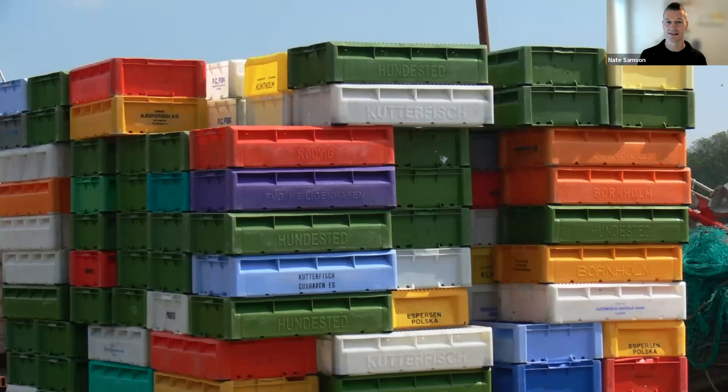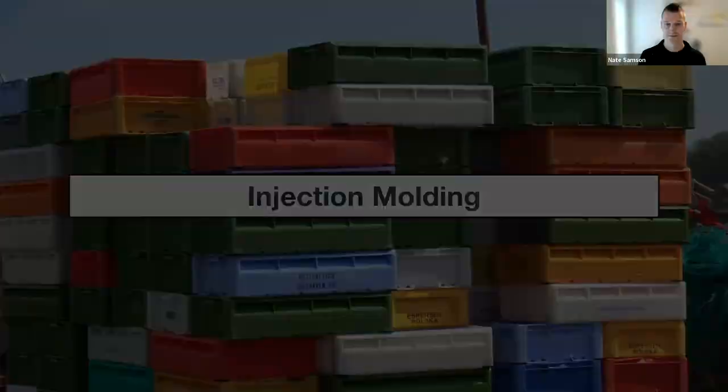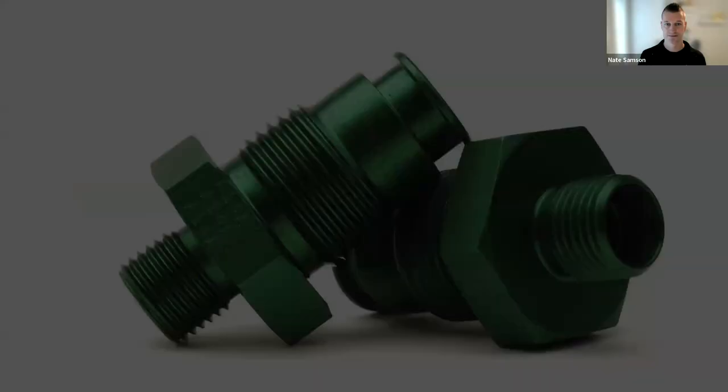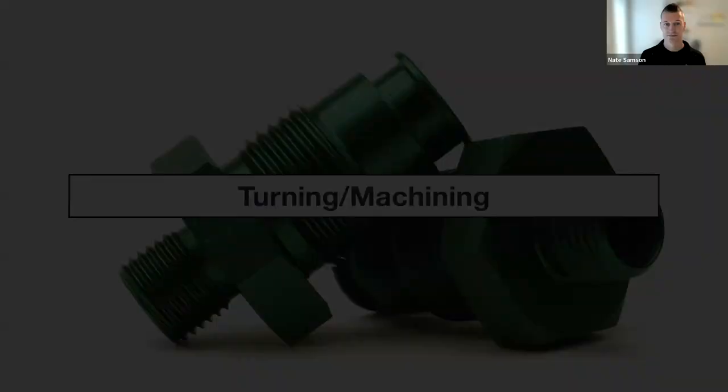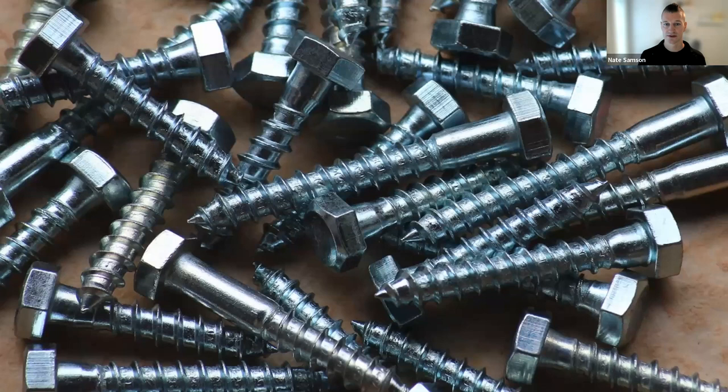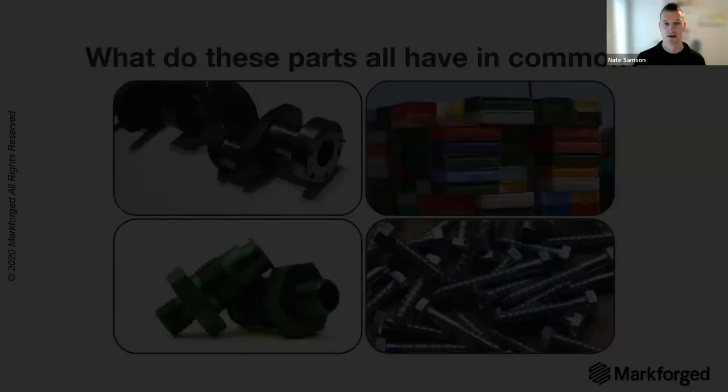Next up, we've got some plastic bins produced in large quantities — injection molding is a great process for producing these. Then some couplings, produced with turning, thread milling, and machining. And last up, some lag screws, made with die casting, thread rolling, and thread cutting.